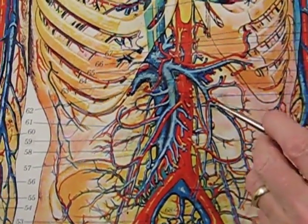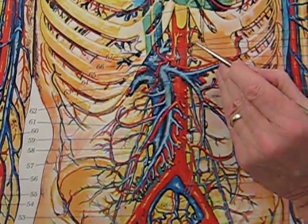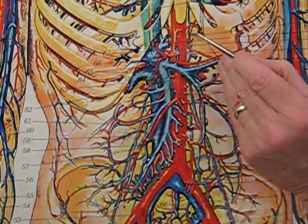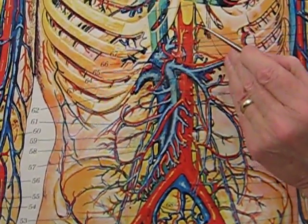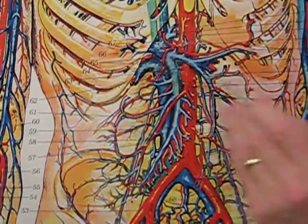Phrenic. P-H-R-E-N-I-C. I happen to know because I worked on a key, that is an inferior phrenic artery, came off the aorta, went to the inferior side of the diaphragm. But we're not here to talk about phrenics now.